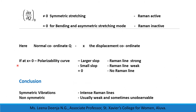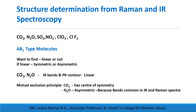So, if at x equal to 0 in the polarizability curve we have a larger slope, then the Raman line will be strong. If the slope is small, then the Raman line will be weak. If there is no slope, there will not be any Raman line. We can conclude that symmetric vibrations give intense Raman lines, while non-symmetric vibrations are usually weak and sometimes unobservable.